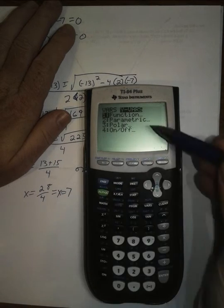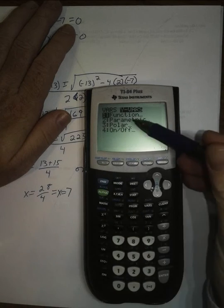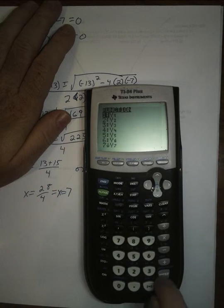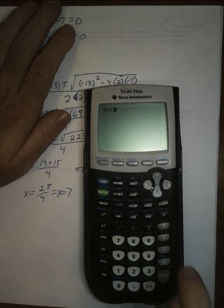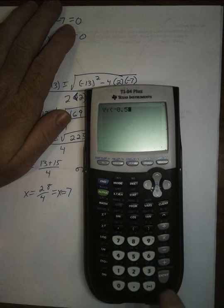Arrow over to where it says y vars. And we want functions, and we're going to do function y1. And we're going to say y1 of negative 0.5, negative 1 half.